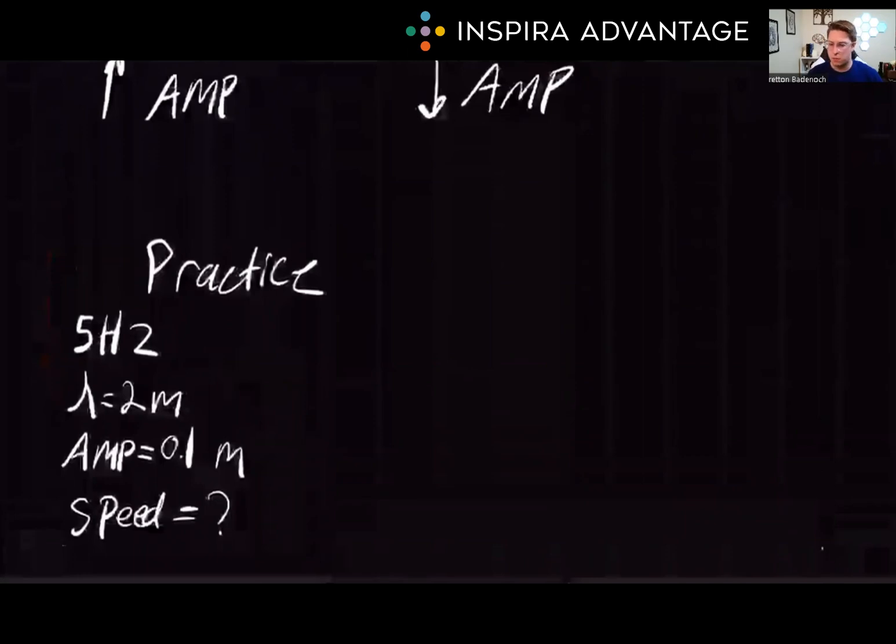Let's put these concepts into practice. Suppose we have a transverse wave on a string with a frequency of 5 hertz, a wavelength of 2 meters, and an amplitude of 0.01 meters. What is the speed of the wave? Give the video a pause and see if you can figure this out for yourself.